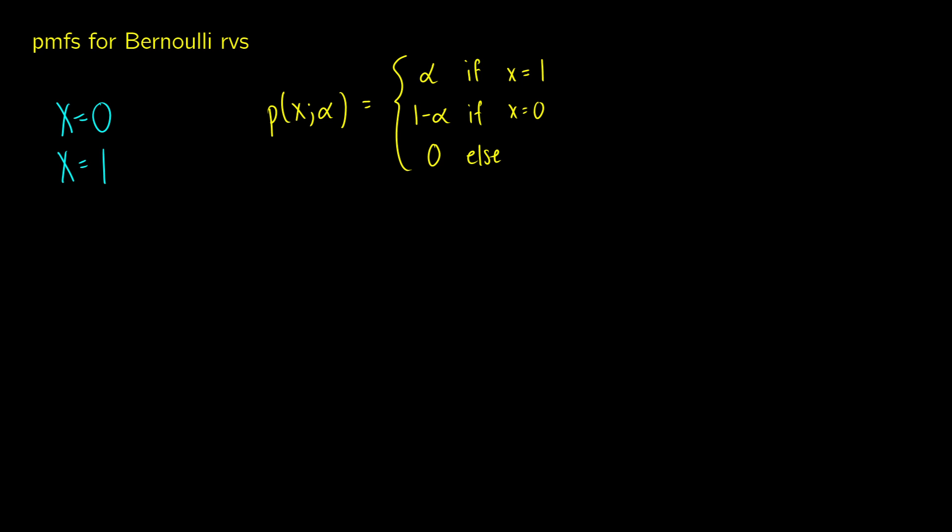x is going to be our variable here, what we're looking for. Let's say we're looking at the number of heads flipped, for example. This is going to be the probability of a success. If we have a success, the probability is going to be alpha. If the success does not occur, if we get a failure, the probability will be 1 minus alpha. And whatever other number we put in, it will be 0.